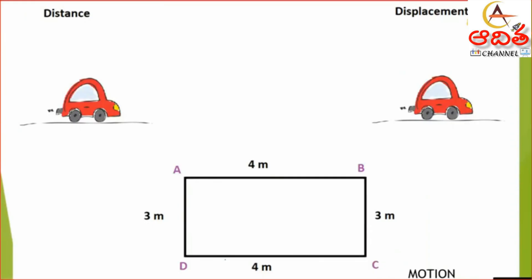Today we will be discussing the topic of speed and velocity. We have previously discussed distance and displacement, so I will do a quick revision. Imagine that this car is going in the clockwise direction from point A to point C. From point A to point C, my distance would be 7 meters.